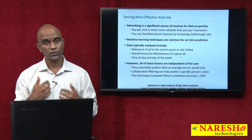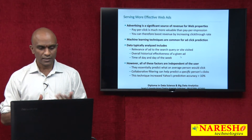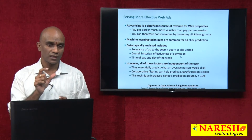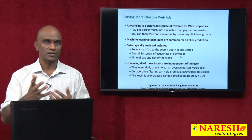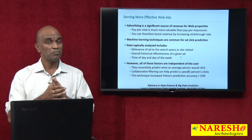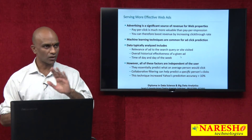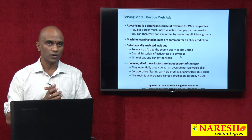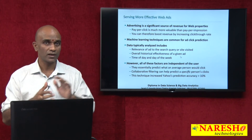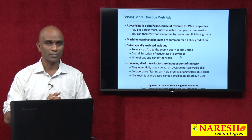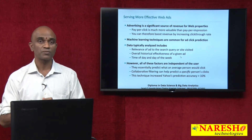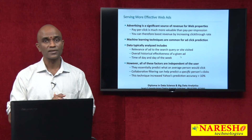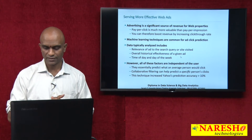All of these factors are independent of the users, essentially predicting what an average person would click. Based on preferences and customer activity, we can predict what similar customers may or may not click on — this is collaborative filtering. When a new person comes in, recommendations depend on what others have clicked and purchased. This technique increased Yahoo's prediction accuracy by 10 percent, which from a data science standpoint is a pretty good increase.